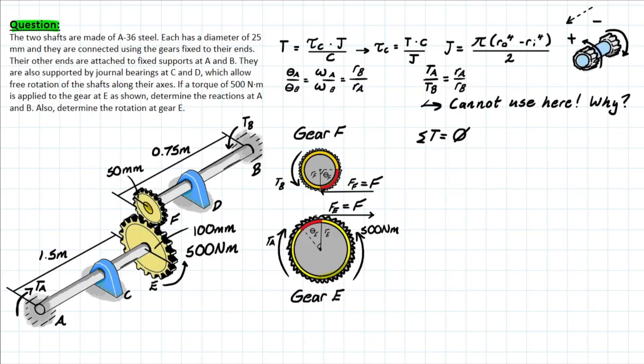So the main takeaway from that video previously was that the torque that is being created as a reaction in these gears will not be equal because the radiuses are different. However, the forces that are reacting or the reaction forces being produced from this external torque are going to be equal, which is why I've written down that the force that's developing in F is going to equal F, which is the same force that is going to be reacting in gear E as well.